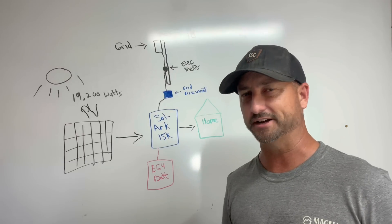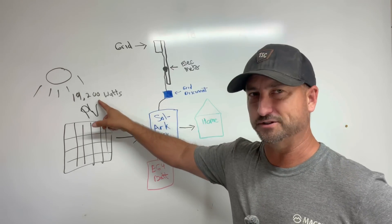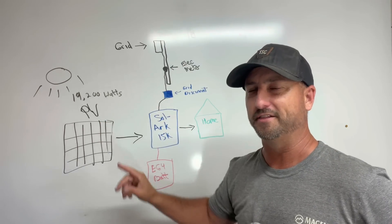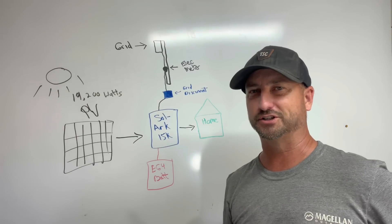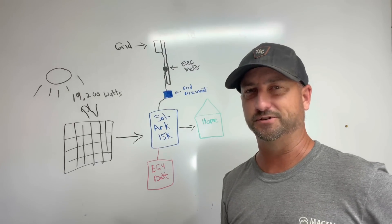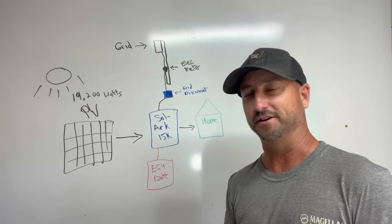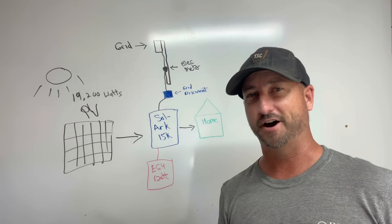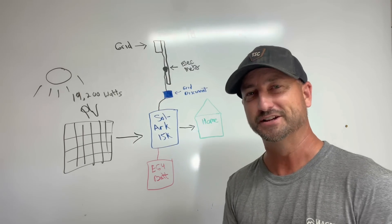And that all happens automatically. The Solark 15k here, again the brain of the operation, it does that without me having to do anything. I just set it once and forget it. Now I have as you can see here a 19,200 watt solar array. That is overkill for most of you. I do have a not a large house but I do have a large water system, a deep water well and an above-ground water pressure pump that runs water and pressure to five houses on my property here on my land.